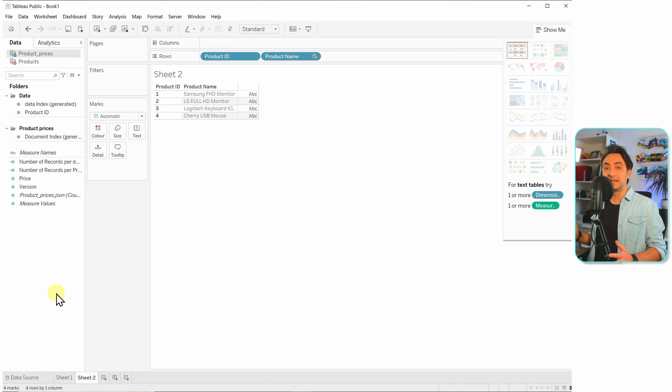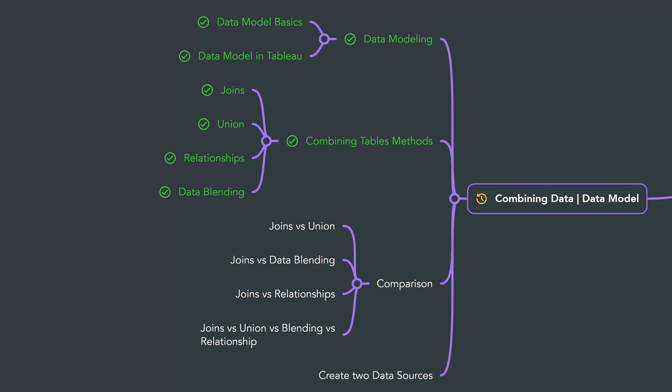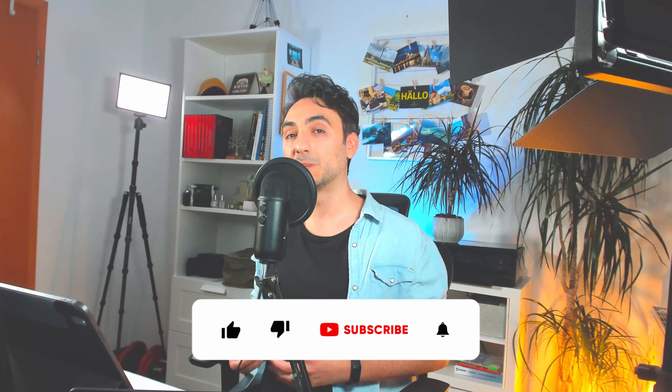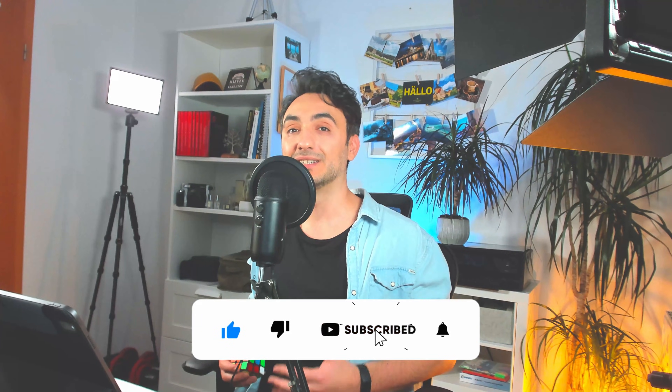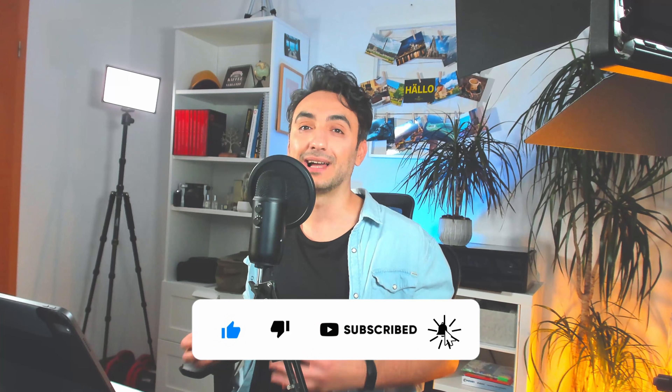Data blending is a very unique and great way to connect and combine data. With that, you now have an overview of all four methods of combining tables. Next we will compare them side by side, starting with the differences between joins and union. If you like the content and want to support the channel, please like and comment — it really helps the YouTube algorithm. Thank you so much for watching and I'll see you in the next video!